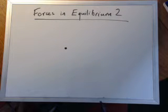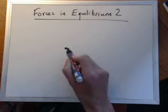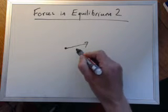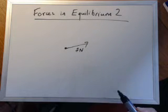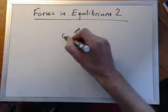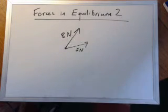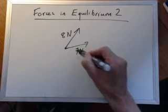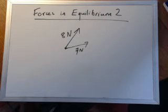And if we apply some forces, let's apply a force there, call that 7 newtons. Another force there, and let's call that 8 newtons. Now, one way we can look at this is if the two vectors follow on each other to find the resultant force out of the others.